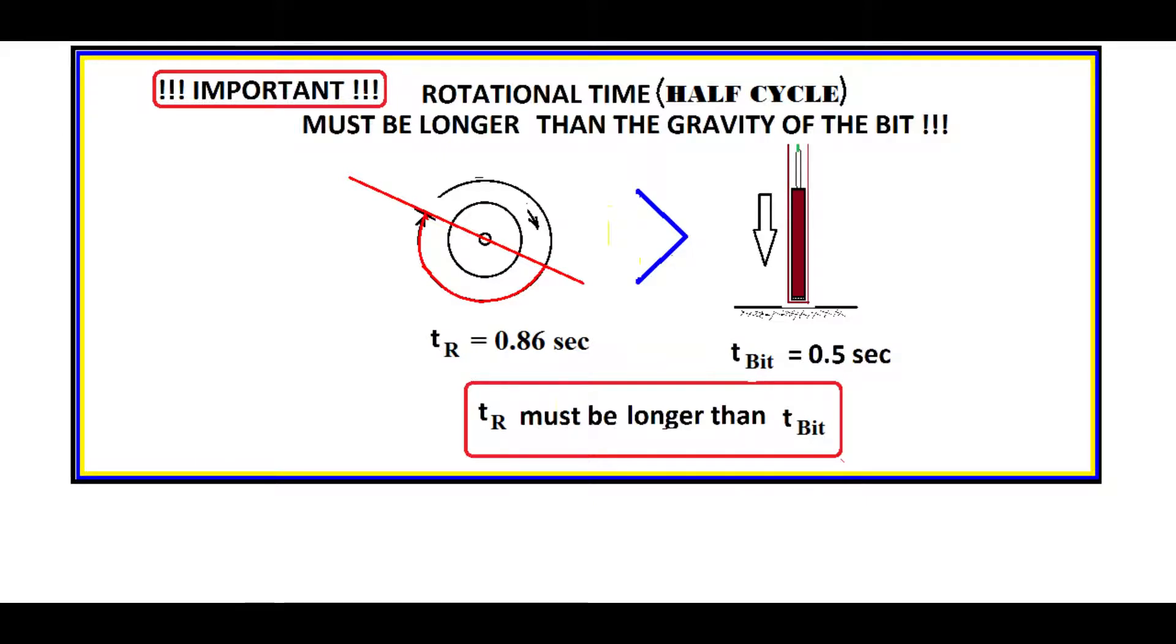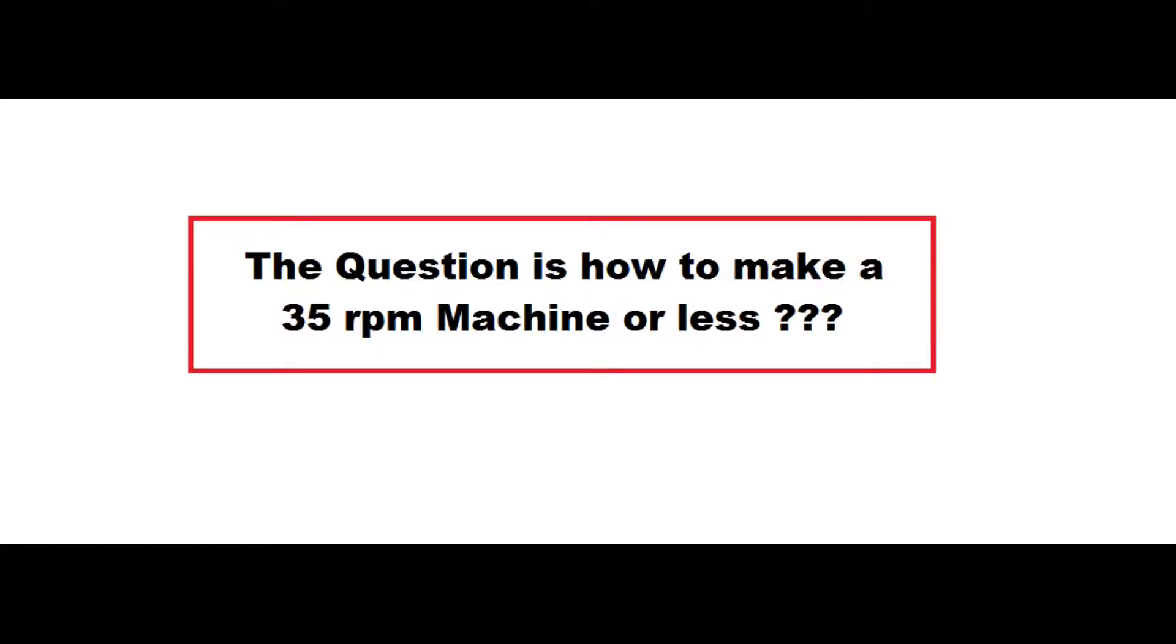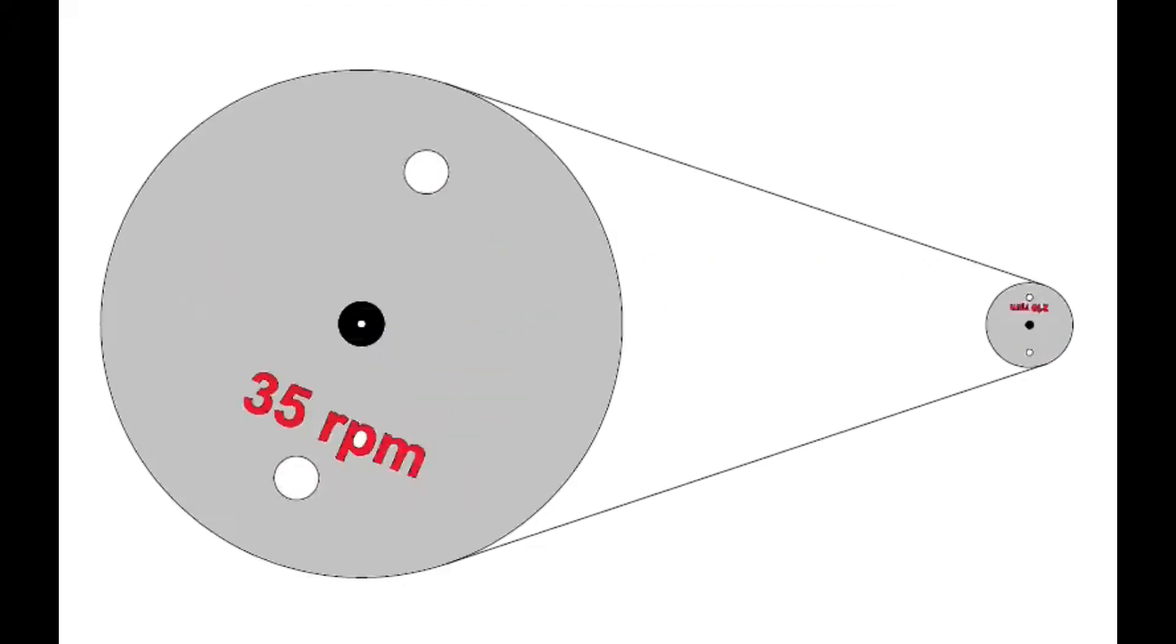So the important thing is the rotational time at half cycle must be longer than the gravity of the bit, or the time the hammer bit hit the ground. So the ideal rotation is 35 RPM or less. If you can make it to 25 RPM, the better.